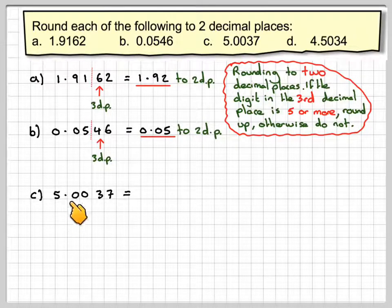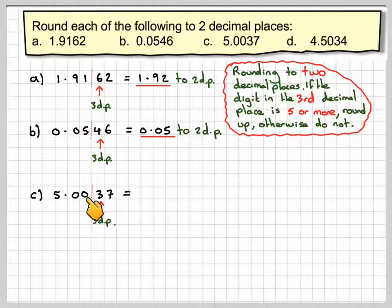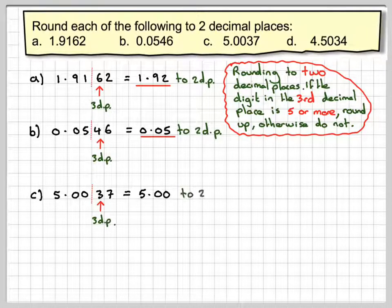Now we've got 5.0037. You need to be a little bit careful here. The third decimal place is the three there, so we're drawing a line here. Three is less than five, so it has no effect on that zero. We need to write 5.00 to two decimal places. Note that we need to write in these zeros.